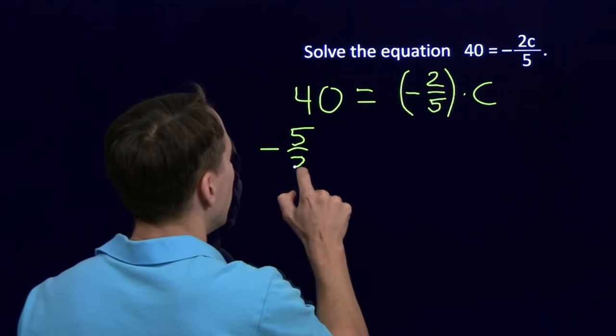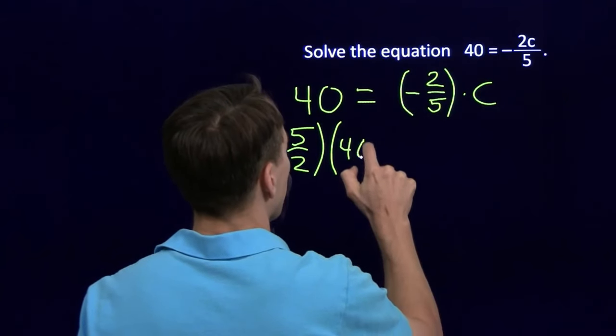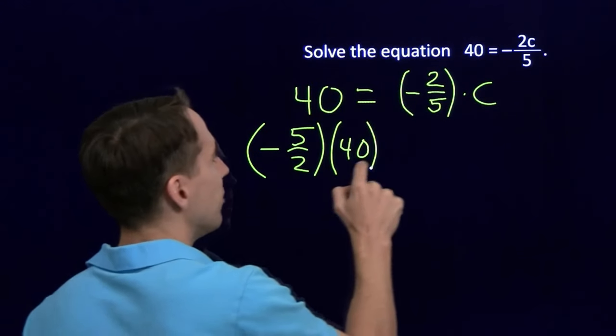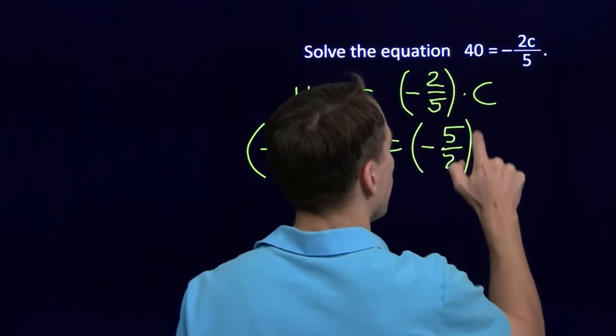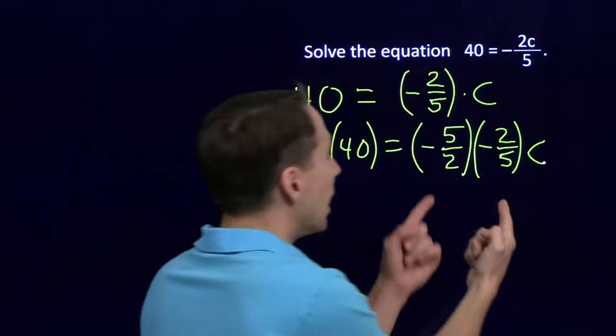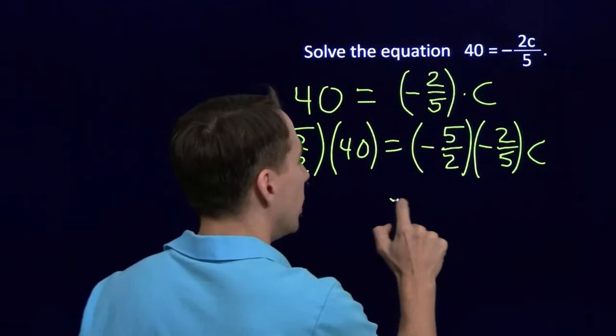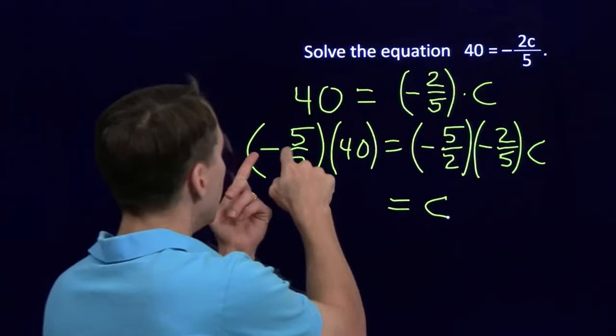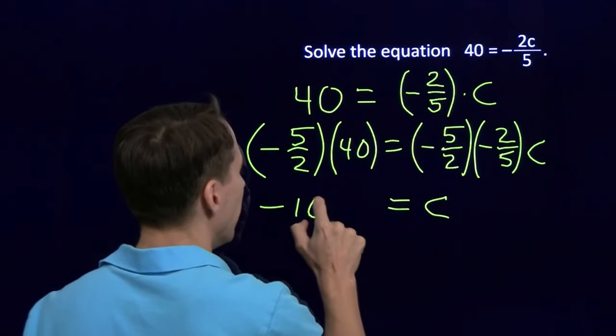So what I'll do here is I'm going to multiply both sides by the same thing. So I'm going to multiply this by negative 5 halves. Now I'm going to multiply the other side by negative 5 halves as well. These are reciprocals. They cancel out. That'll be 1. I'll be left with c over here. Negative 5 halves of 40. Negative 5 times 40 is negative 200. Divided by 2 is negative 100.